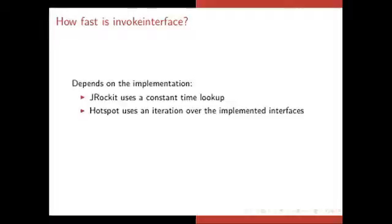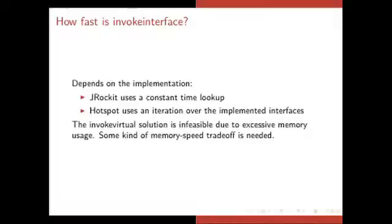Now how fast is an invoke interface? Well, that depends on the implementation. So Jrocket uses a constant time lookup and Hotspot, I believe, uses an iteration of the interfaces that are implemented by the class. So it can be done in two different ways. And we can't use the invoke virtual implementation for invoke interfaces because that would use an excessive amount of memory. Because the virtual tables would be too big. So we need some way to memory speed tradeoff.